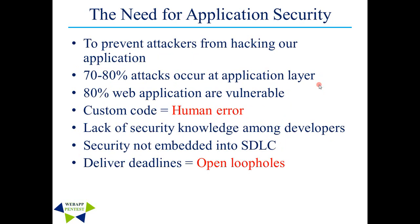Why is there a need for application security? It is to prevent attackers from hacking our application. About 70 to 80% of attacks occur at the application layer, and 80% of web applications are vulnerable. Custom code equals human error — developers who are not aware of security might introduce loopholes. There is also a lack of security knowledge among developers, security not being implemented into the SDLC, and delivery deadlines creating pressure that leads to open loopholes in the code.